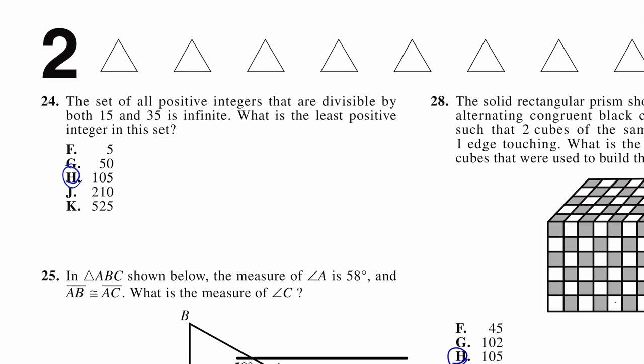When they say divisible, that means a number divided by 15 and a number divided by 35 gives a whole number. For example, you can't divide 5 by 15 — 5 divided by 15 gives a decimal, and same with 35 and 50. So let's check 105. You can do this on your calculator or in your head: 105 divided by 15 is 7, and 105 divided by 35 is 3. It wants the least positive integer in the set, and this is the smallest number in our answer options. So our answer is letter H.